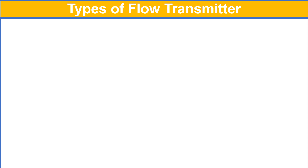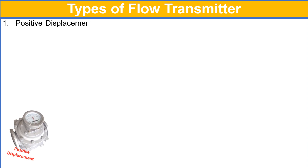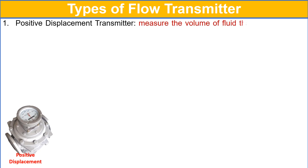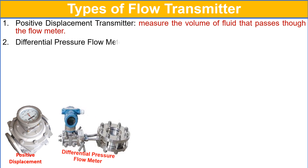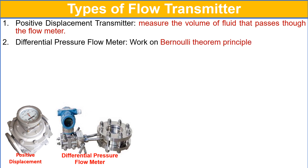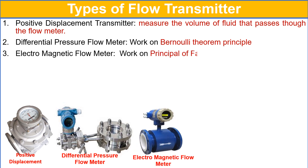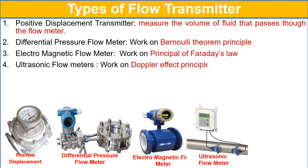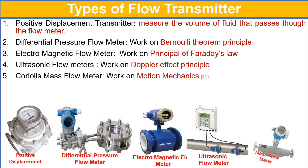Positive displacement flow transmitters measure the volume of fluid that passes through the flow meter. Differential pressure flow transmitters work on Bernoulli's principle. Electromagnetic flow transmitters work on Faraday's law. Ultrasonic flow transmitters work on the Doppler effect principle. Coriolis mass flow transmitters work on the motion mechanics principle.